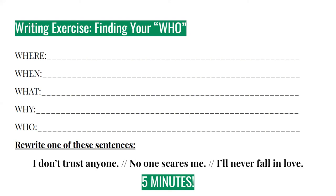After you fill in your where, when, what, why, and finally your who — your character — I want you to think about how that character might say one of these lines, and then rewrite it in their voice: "I don't trust anyone." "No one scares me." "I'll never fall in love." Any one of those three sentences, or all of them if you have time. Start with filling in those blanks and then go from there. You have five minutes for this exercise.